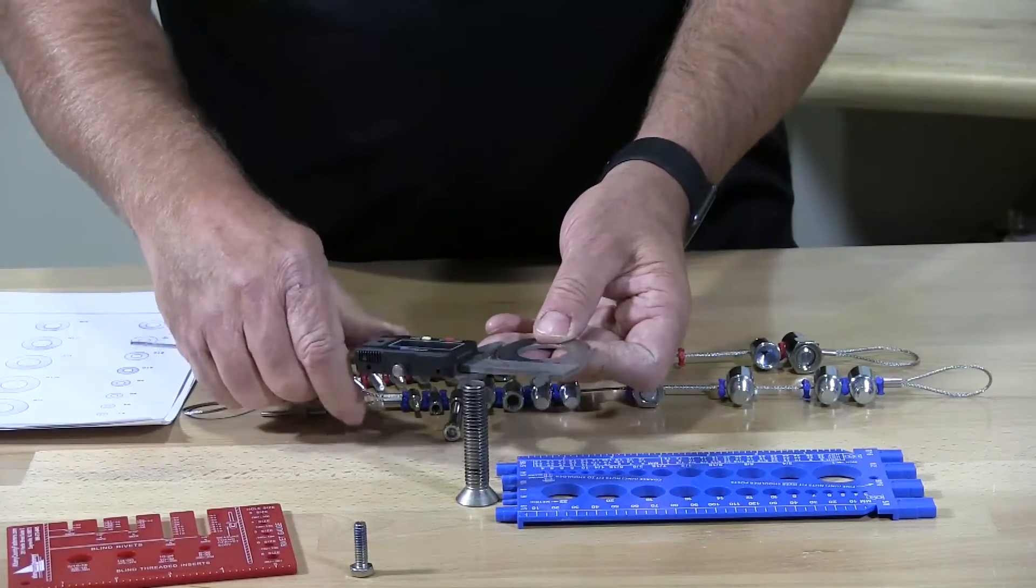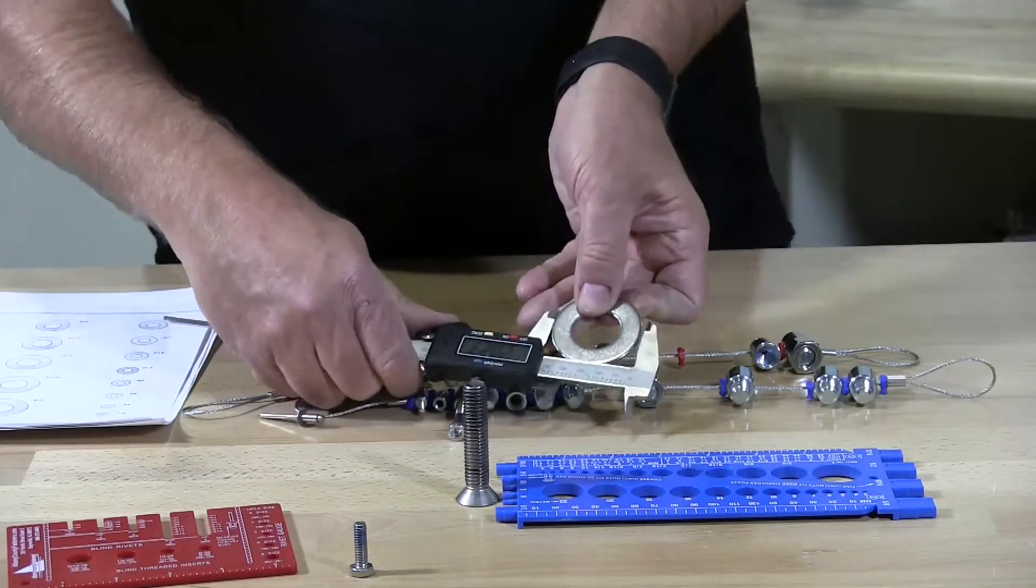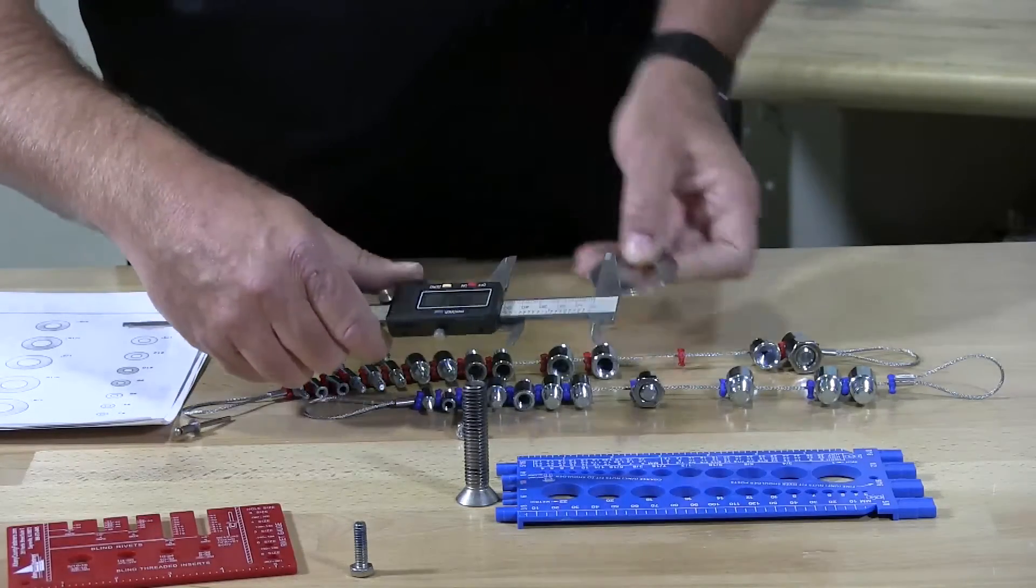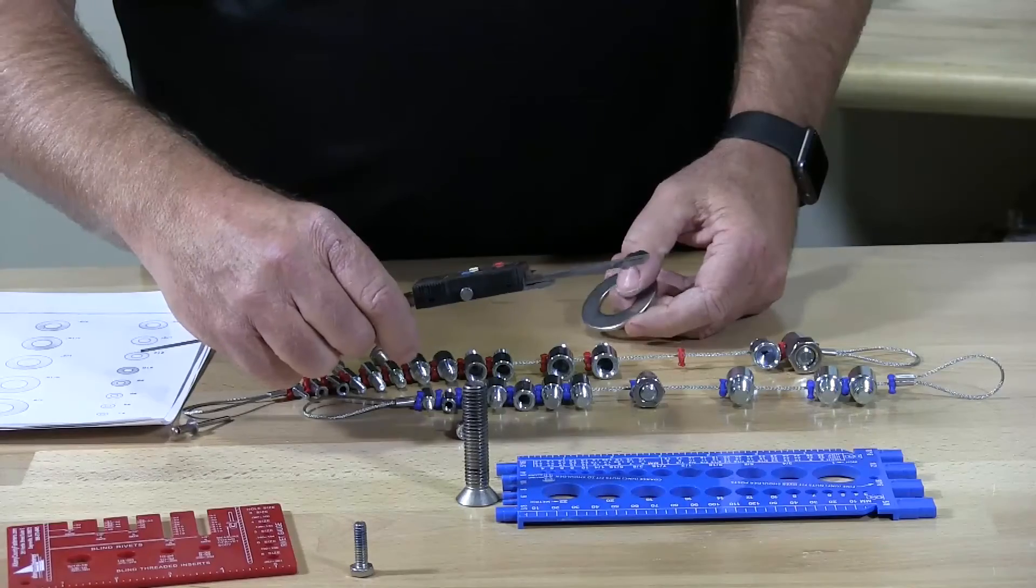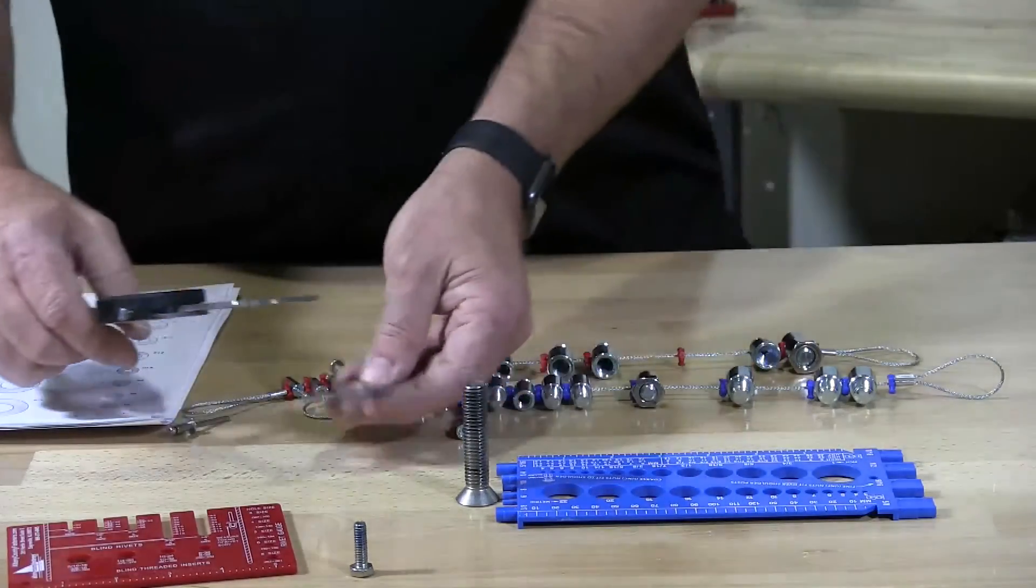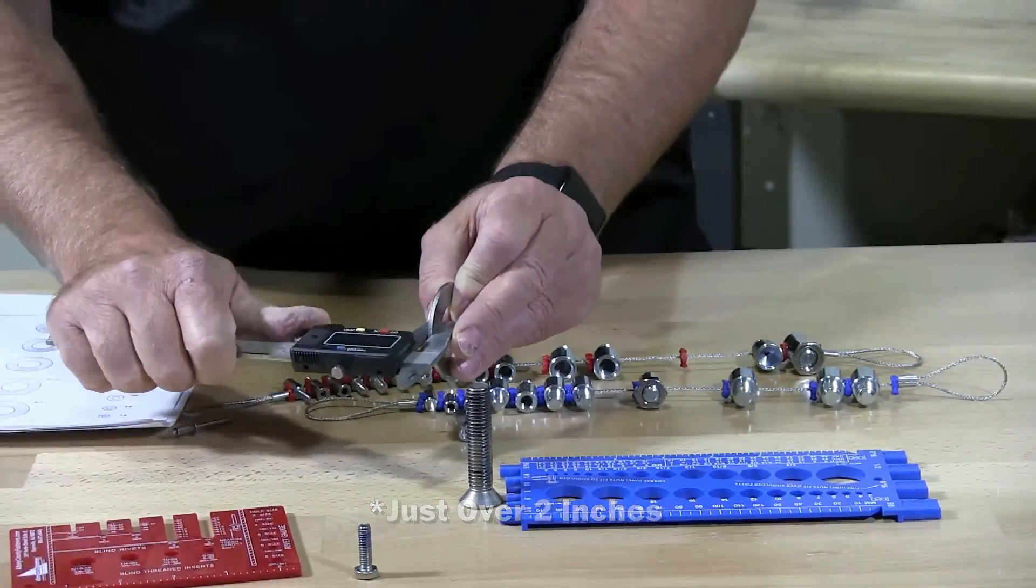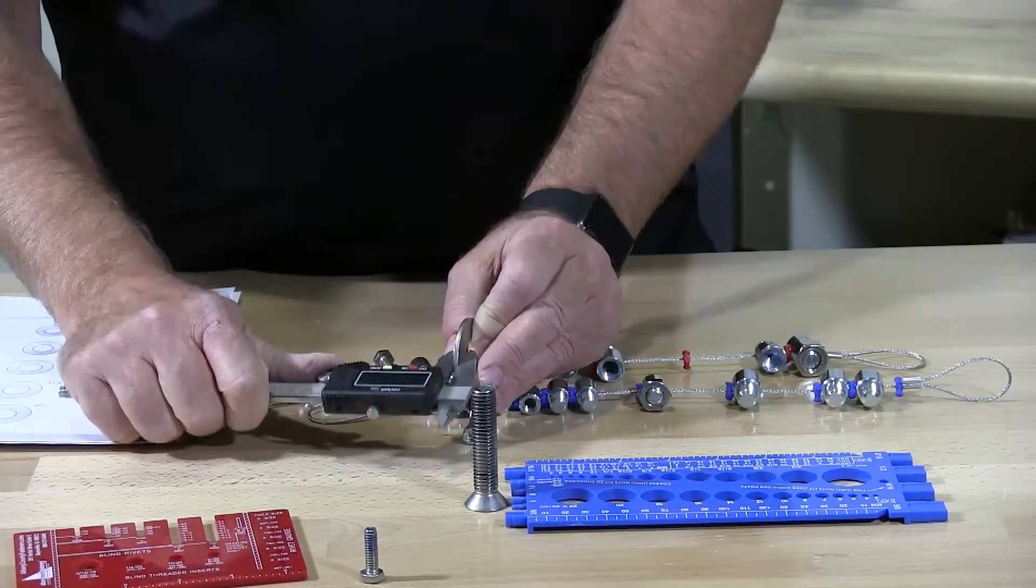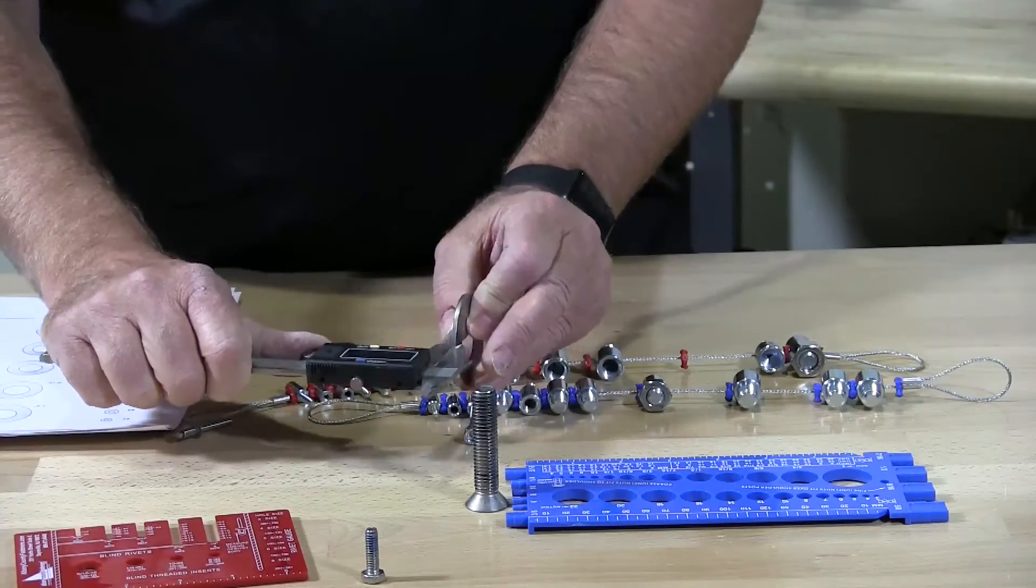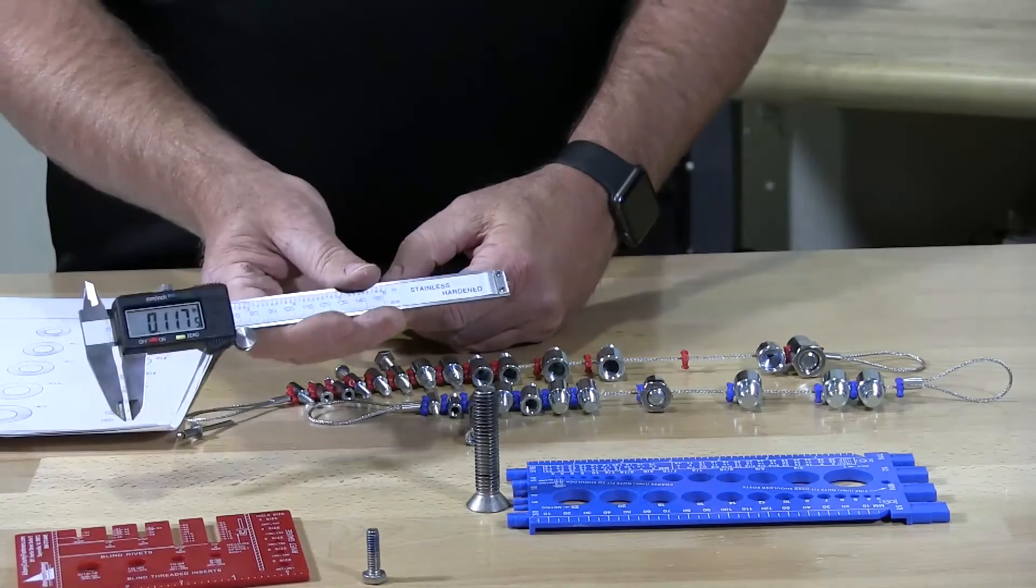You can also measure with the caliper an outside diameter, which will say that the outside of this washer is 2.014 inches. So it's just over one inch, and you can measure the thickness. So that's 0.1175. So this is a very handy tool to have.